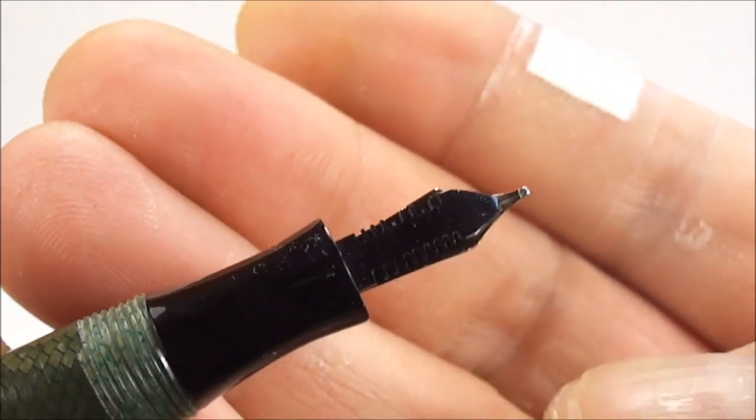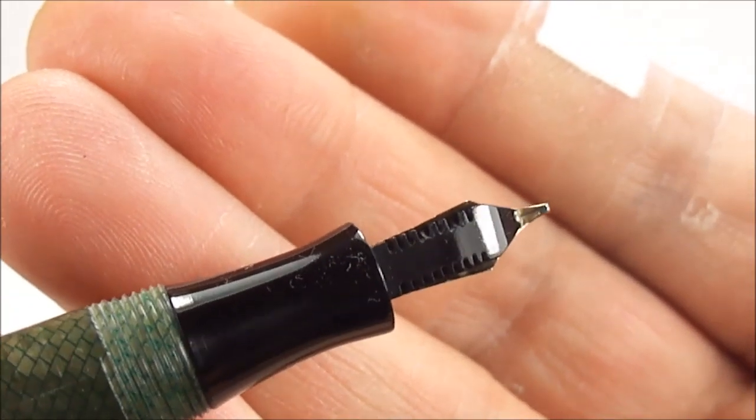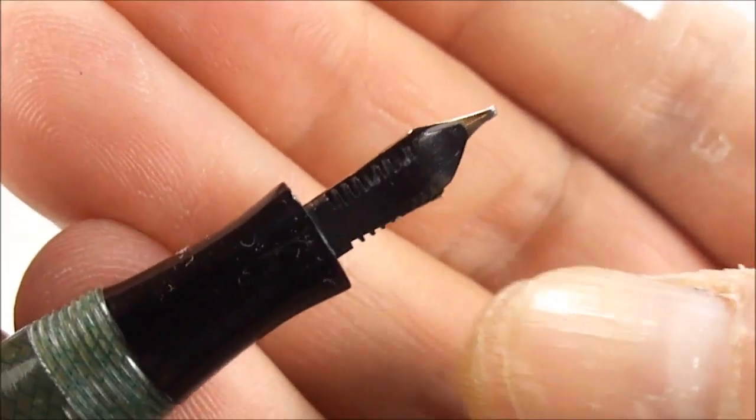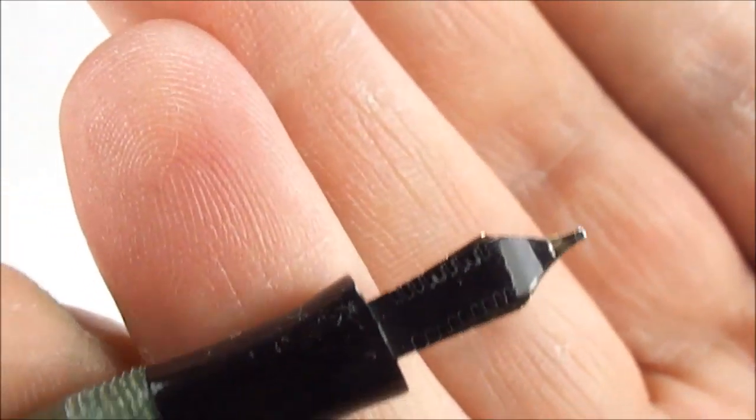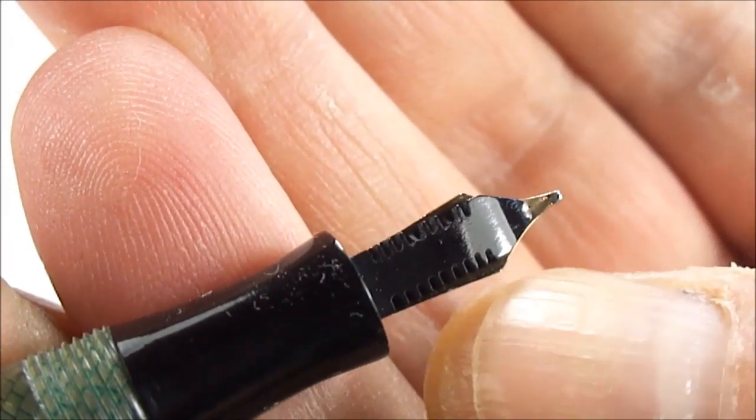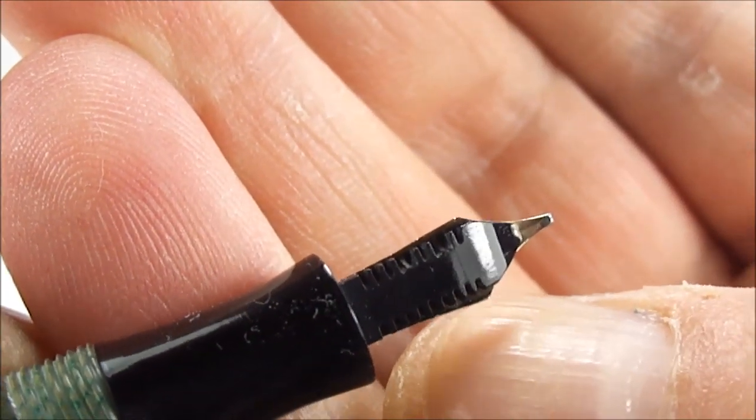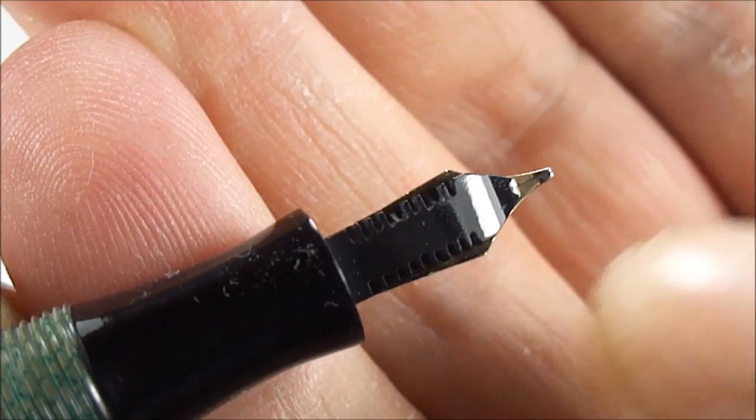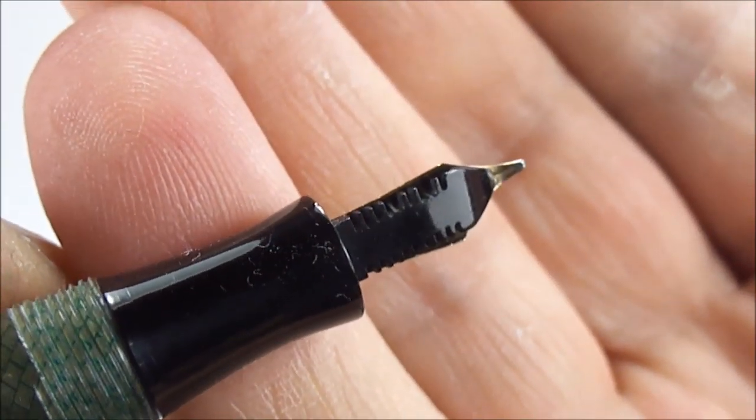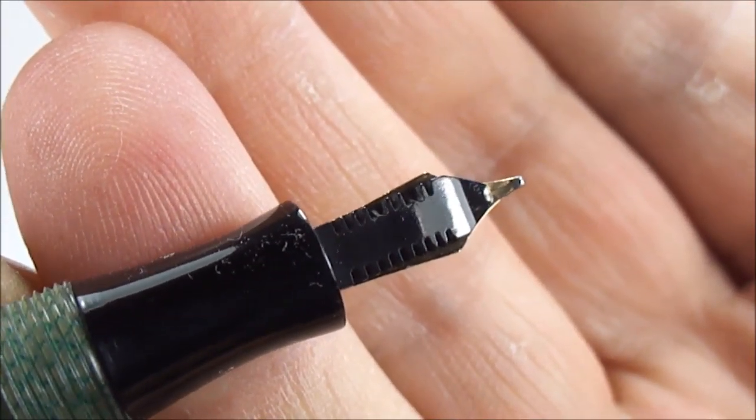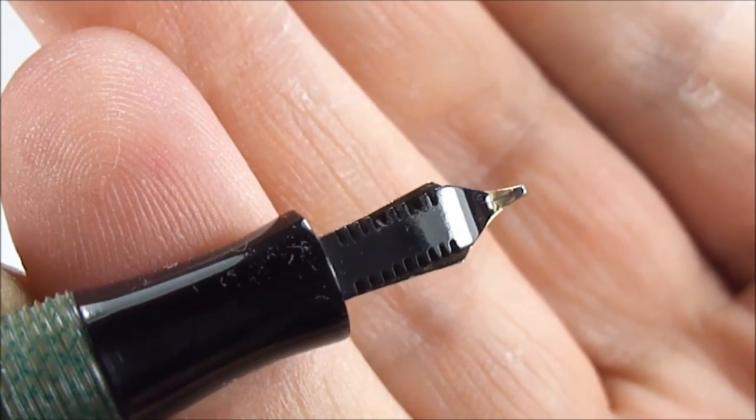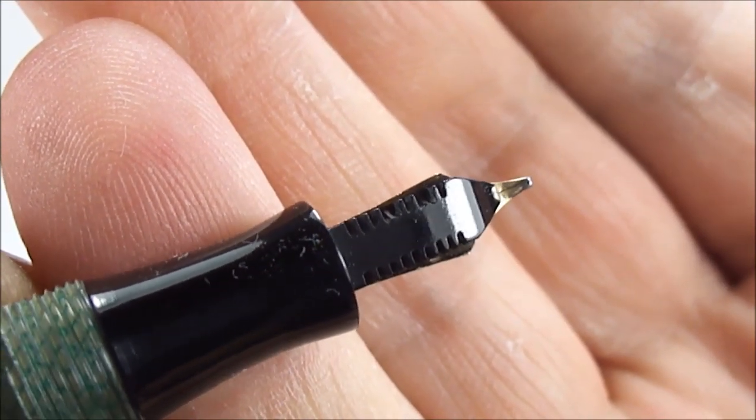Now the only downfall with these particular pens is that the feed - the comb or the fins - were quite fragile and thin. As you can see hopefully on this one, there's a couple of fins that are actually missing. They had a tendency to actually break off.